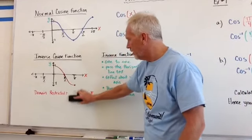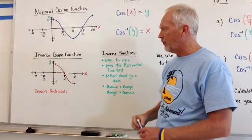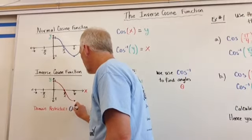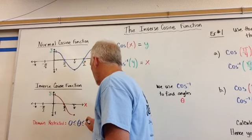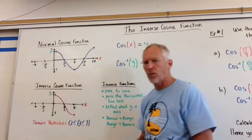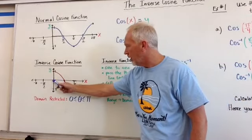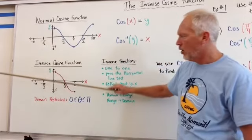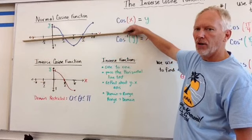On an inverse cosine function, now our domain will be restricted from 0 as theta to pi. So we are going to restrict theta from 0 to pi. And the reason why is because we have to pass the horizontal line test. So if we were to have this whole function in there, we would not pass the horizontal line test.